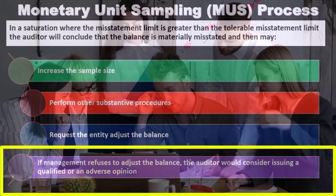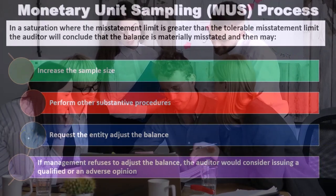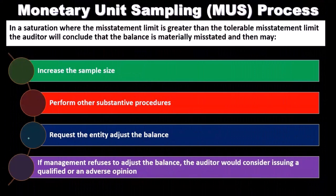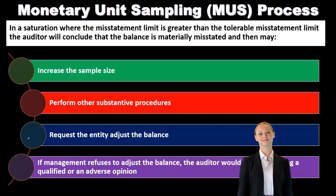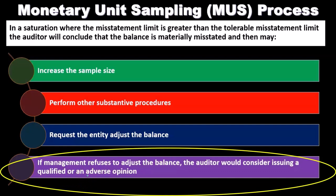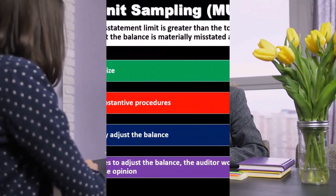However, if management refuses to adjust the balance, the auditor will consider issuing a qualified or adverse opinion. We might say that inventory or accounts receivable are overstated and that an adjustment needs to be made. If management refuses, we would issue a qualified opinion — stating the financial statements are correct except for this one deviation — or an adverse opinion if severe enough to conclude the financial statements are not materially correct. If we were going to give an adverse opinion and the client wasn't making the adjustment, it might be necessary to stop the engagement at that point as well.